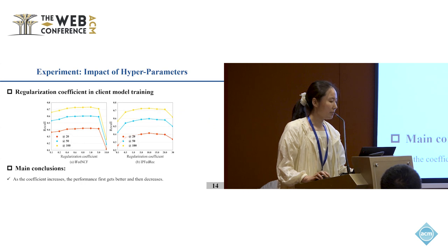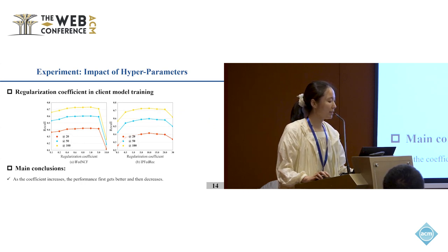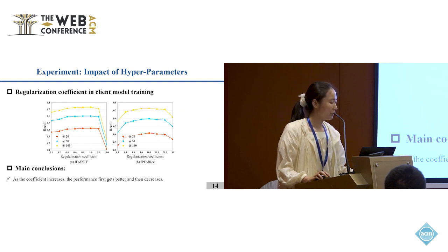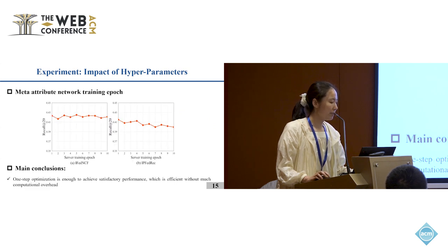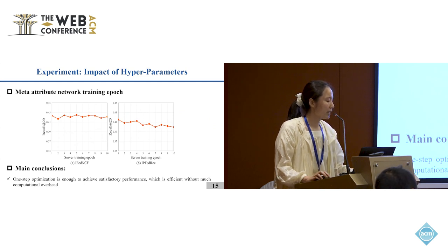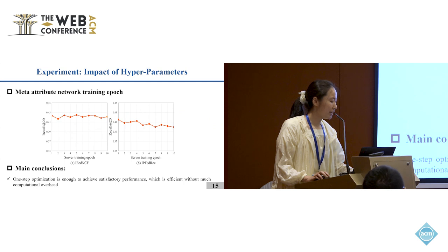We also conduct experiments to analyze the impact of hyperparameters. For the regularization coefficient in client model training, as the coefficient increases, the performance first improves and then decreases. For the meta attribute network training epoch, one-step optimization is enough to achieve satisfactory performance, which is efficient without much computational overhead.